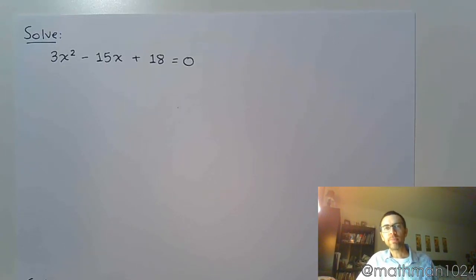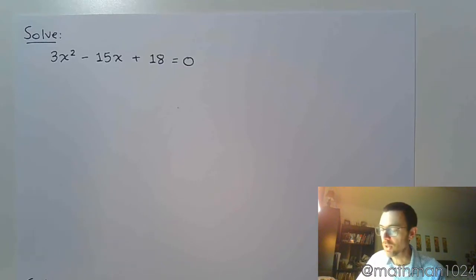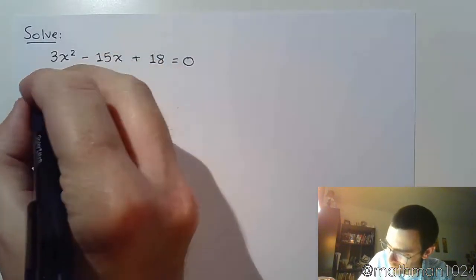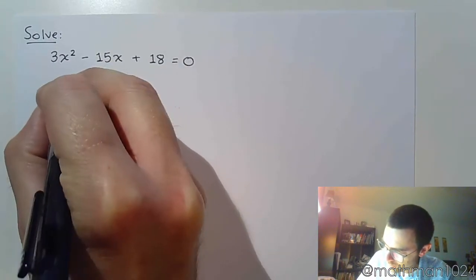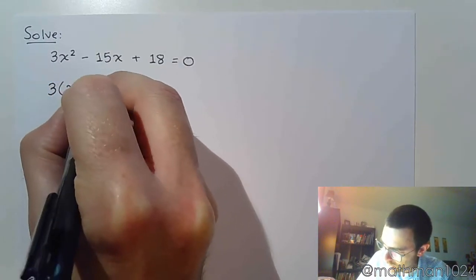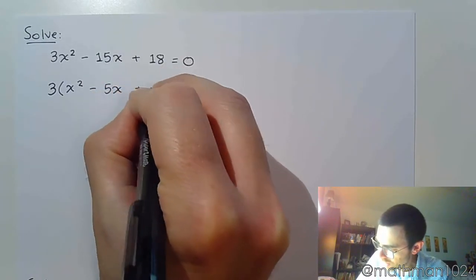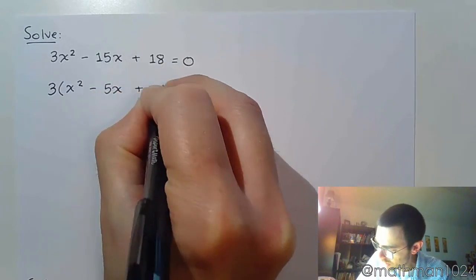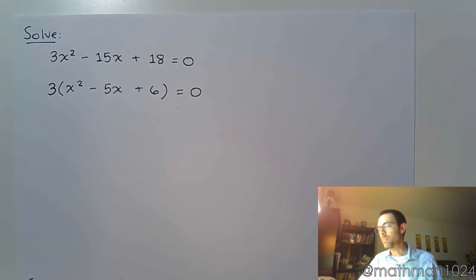One of the things that a lot of students forget about when it comes to factoring is to factor out the greatest common factor if there is one. When we look at this, there is a common factor for all three terms, and that's 3. So factor out the 3, and now we have x squared minus 5x plus 6 is equal to zero.